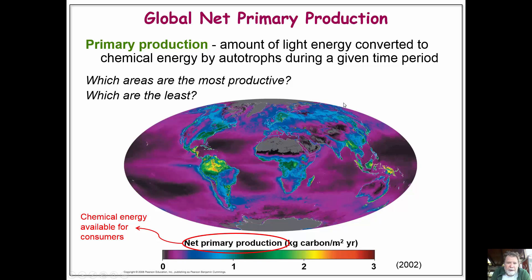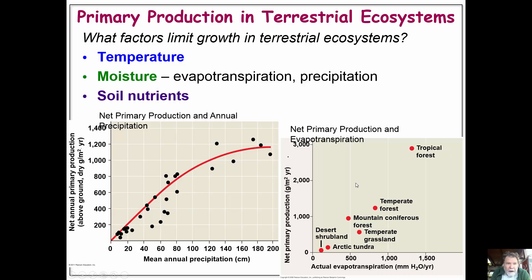We talked about global net primary production. This slide looks at kilograms of carbon per meter per year. The most productive areas are in the tropics because they get the most sunlight and water. In areas with those 30-degree gyres where we don't get much water, we have deserts with very little productivity. The poles don't get much sun or warmth. While the oceans are not as productive per unit area as the rainforest, because there's so much more ocean, the vast majority of net productivity comes from the oceans.